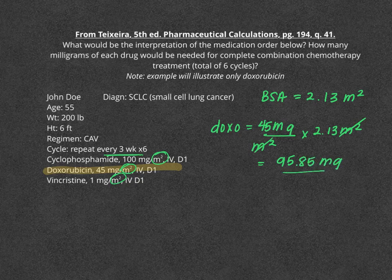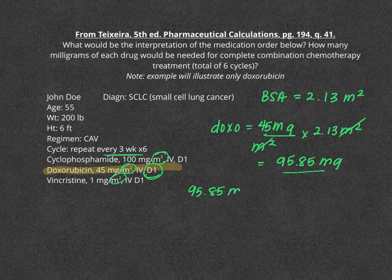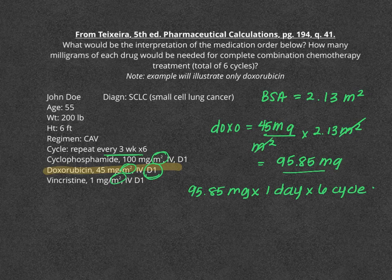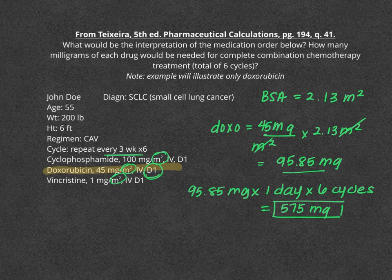Be very clear that this 95.85 milligrams is only for one day of that cycle, so we need to keep going. 95.85 milligrams times one day — but we're asked to figure this out for the entirety of all six cycles. Solving for that, we get 575 milligrams. So 575 milligrams of doxorubicin would be needed for the entire six cycles of therapy.